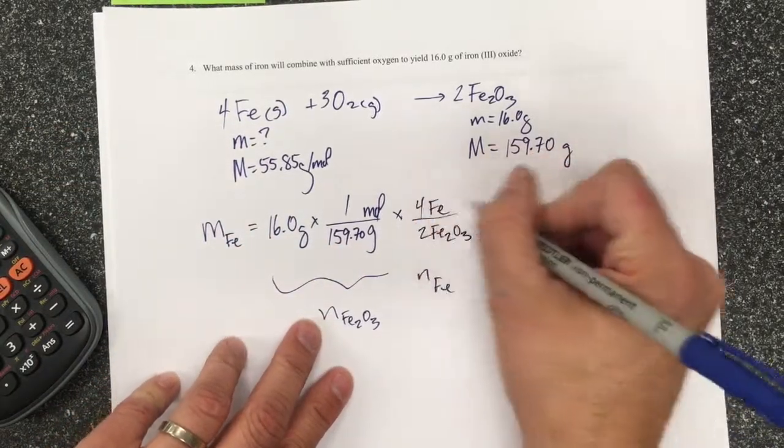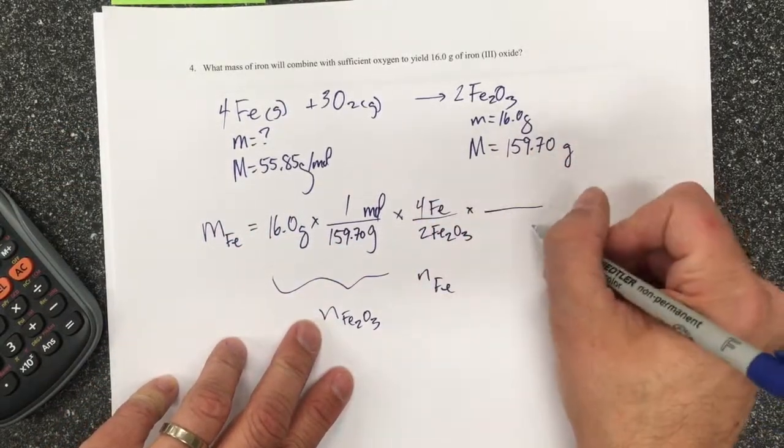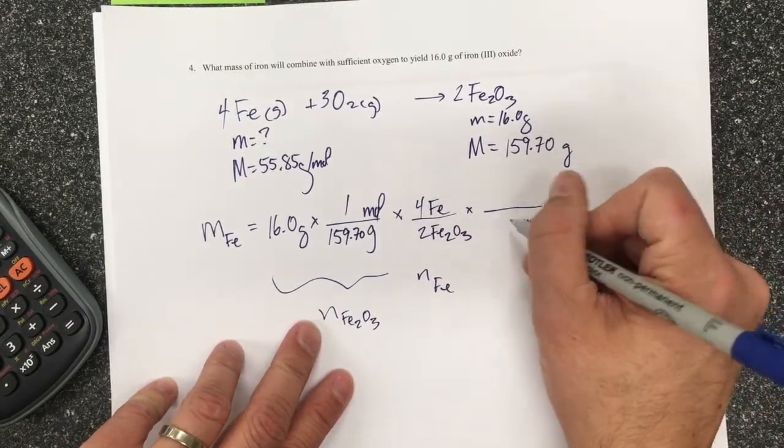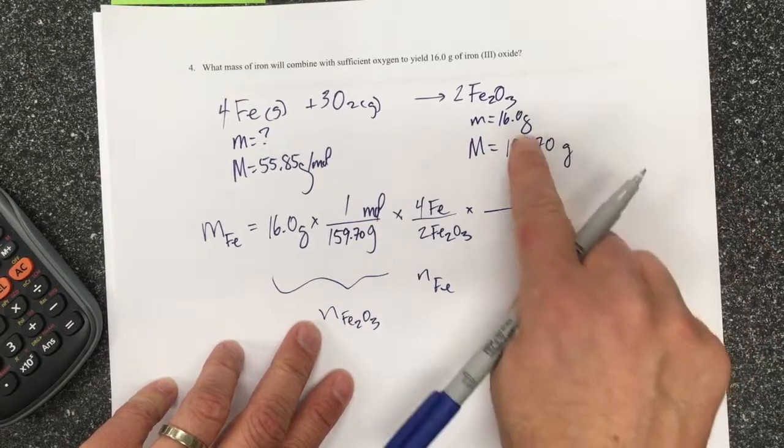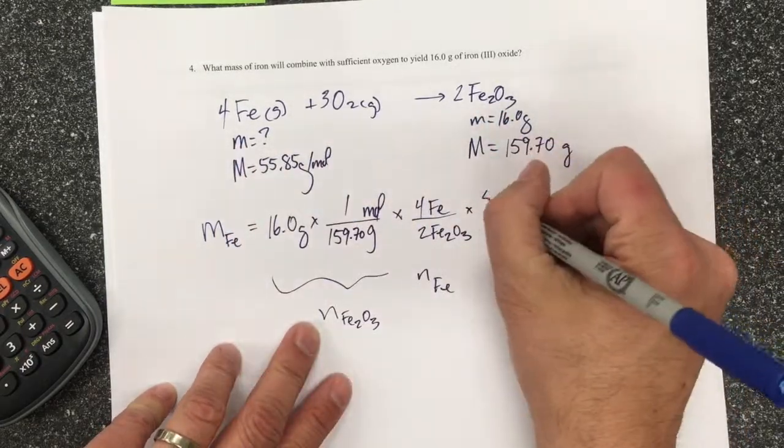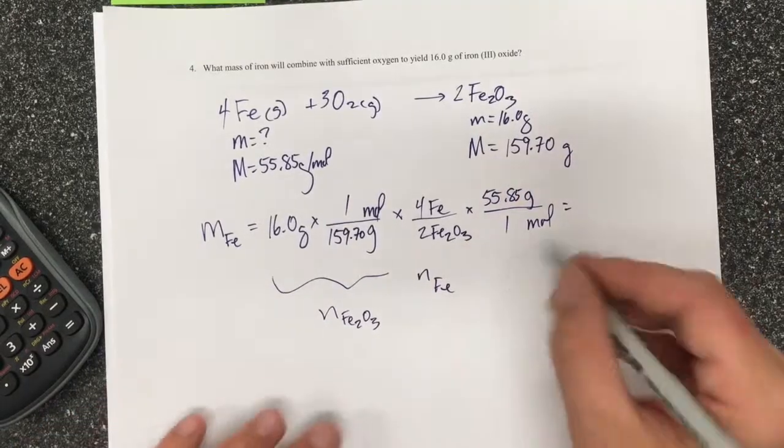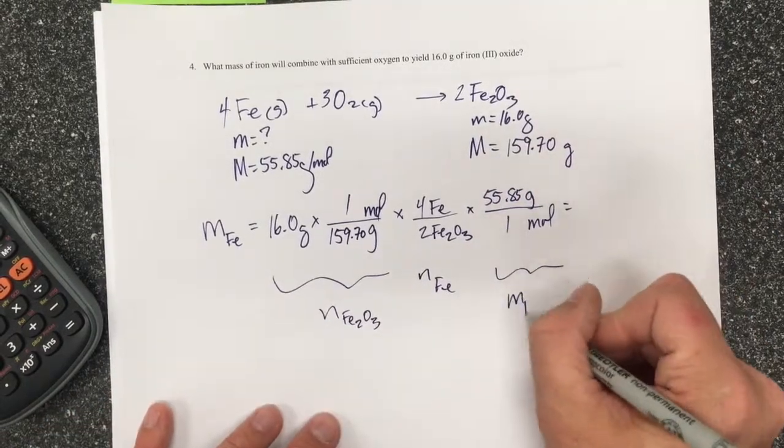So 2 iron 3 oxides for 4 irons and then I'm going to get rid of the moles of iron and be left with grams. And so iron has 55.85 grams per mole. And so this is going to end up giving me the mass of iron.